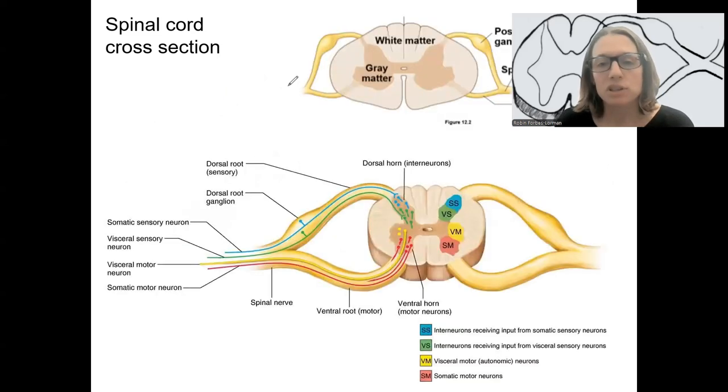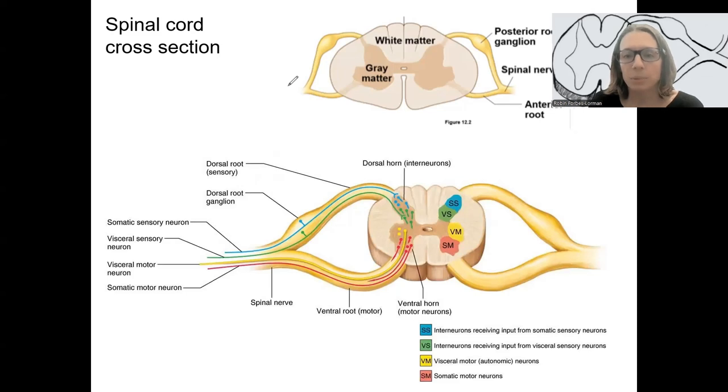Okay, I like this image here showing basically the same thing I just showed with these kind of color-coded regions. Remember that visceral is the same thing as autonomic. So this is a nice resource to use.